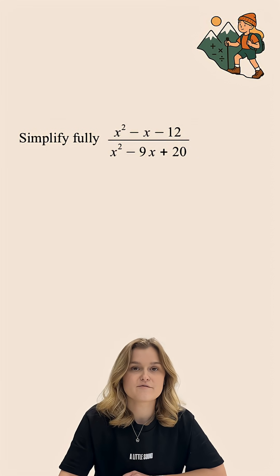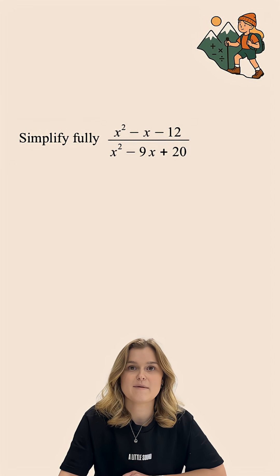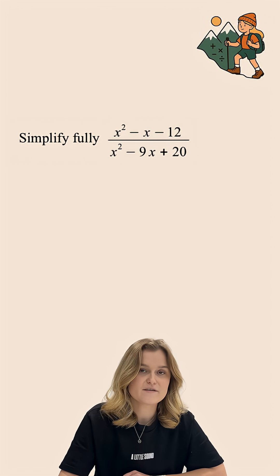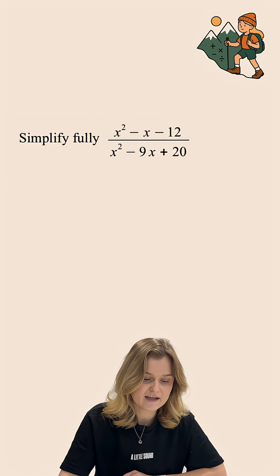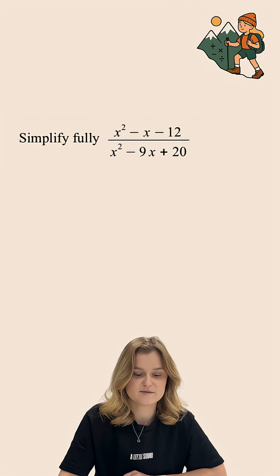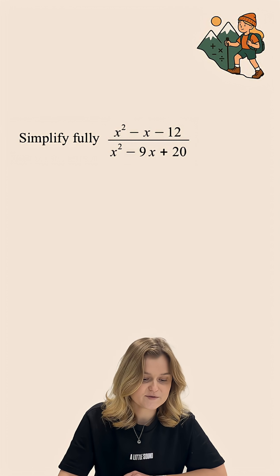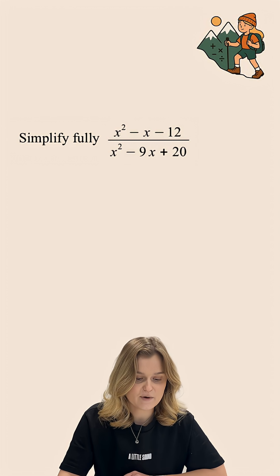Simplifying algebraic fractions is a really common topic in the GCSE Maths higher tier exams. For this question, we want to simplify fully x squared, subtract x, subtract 12, all over x squared, subtract 9x, add 20.